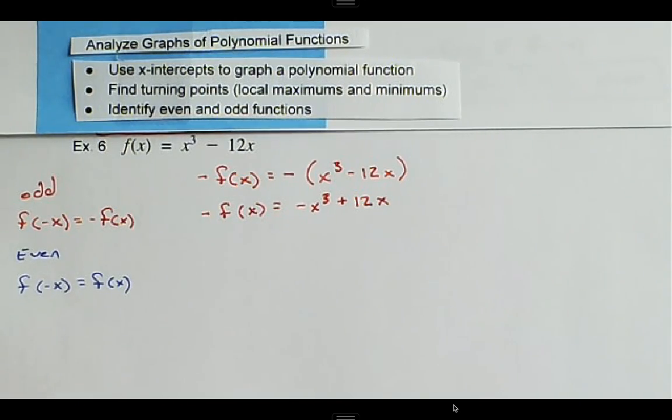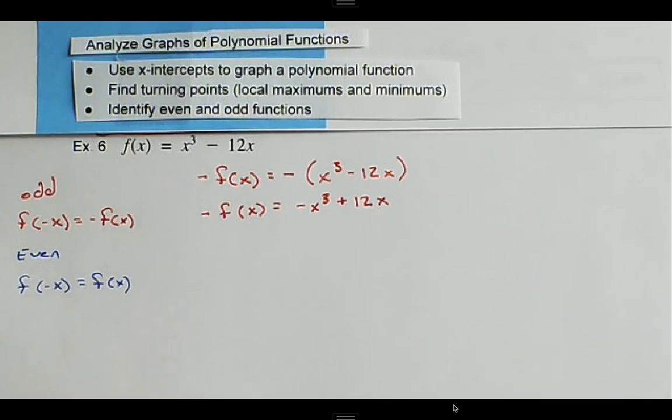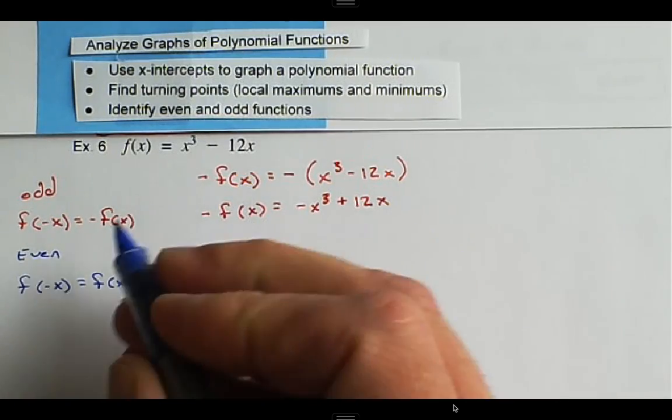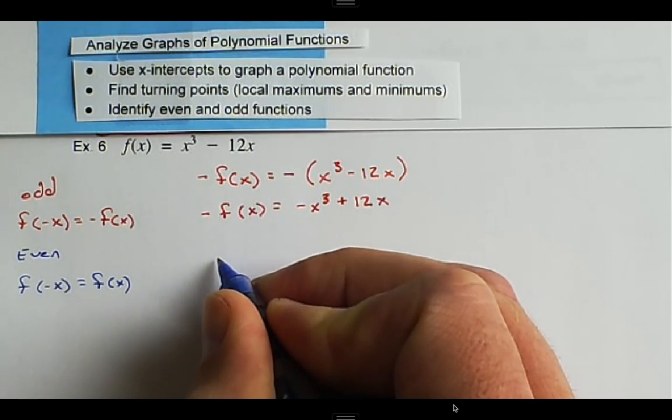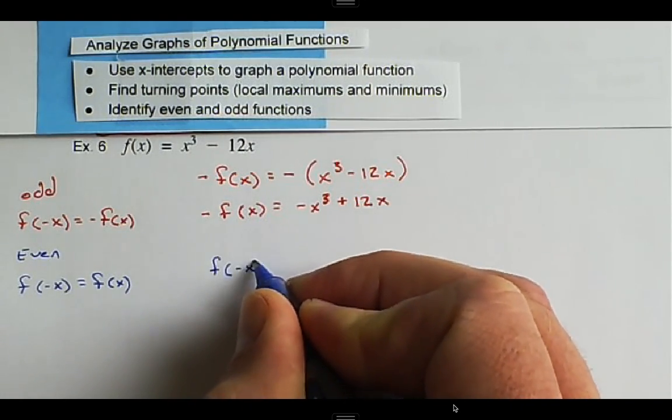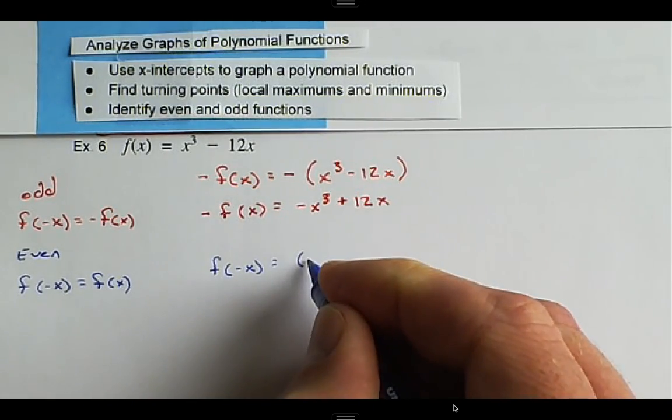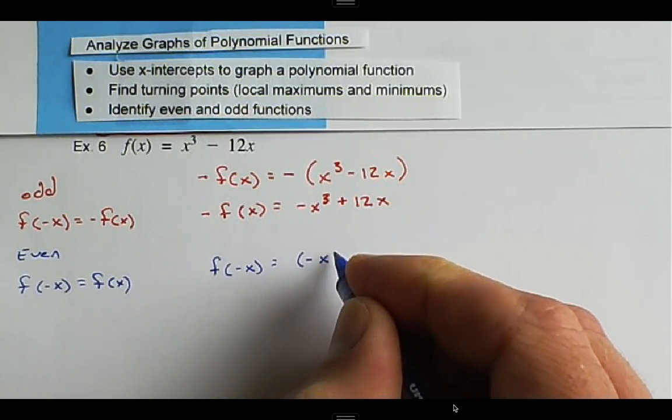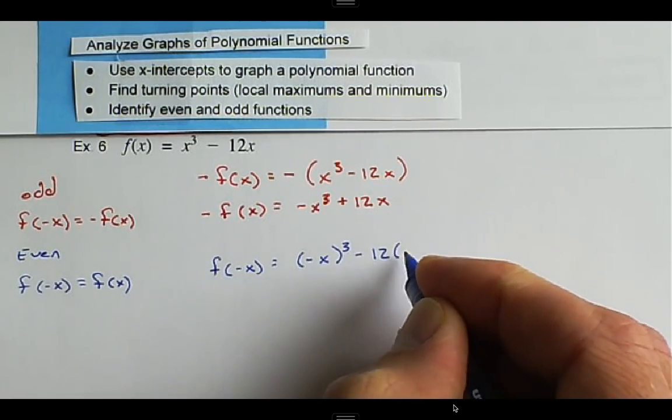And then the next thing we need to check is we need to check the function evaluated at negative x. So the function evaluated at -x, and we want to check what that's equal to. So (-x)³ - 12 times (-x).